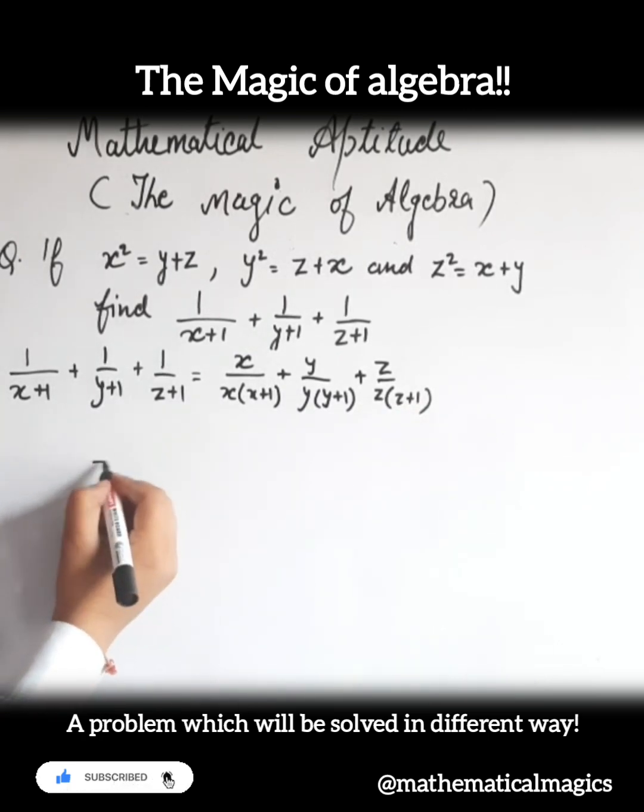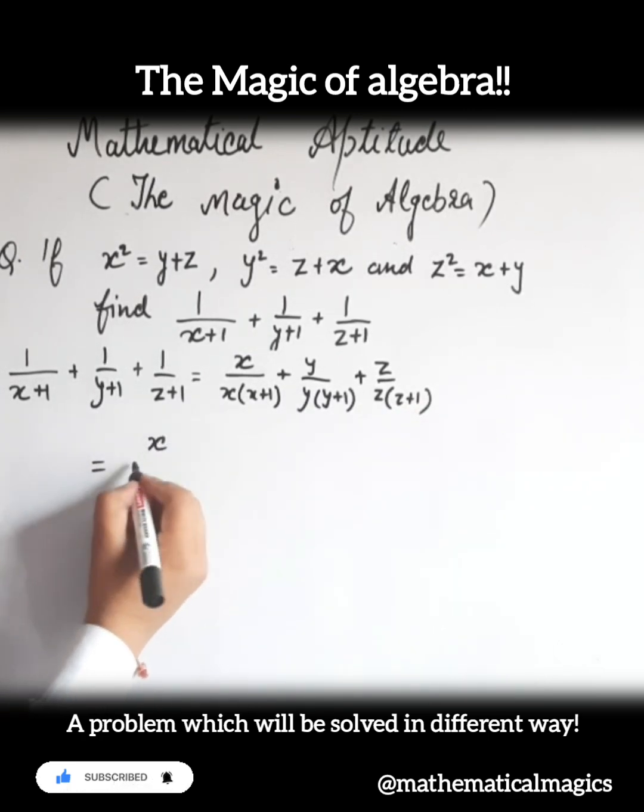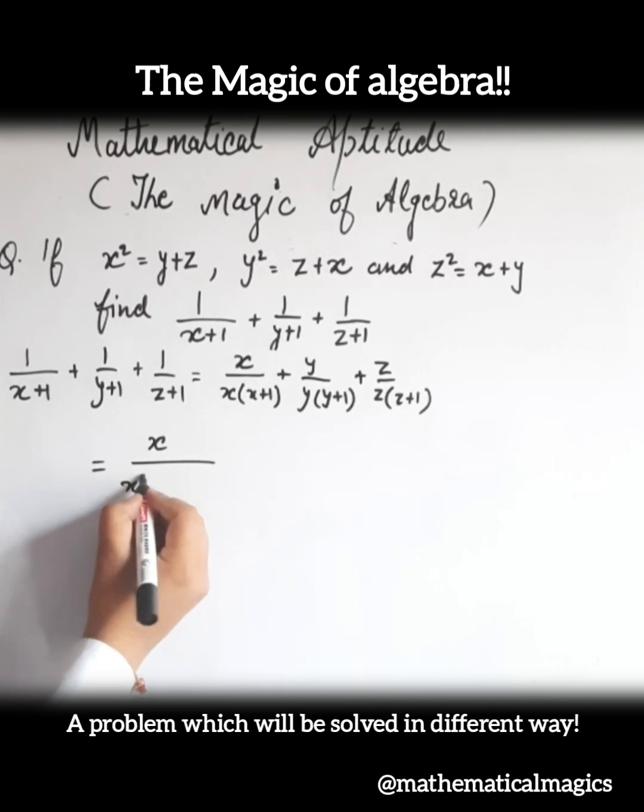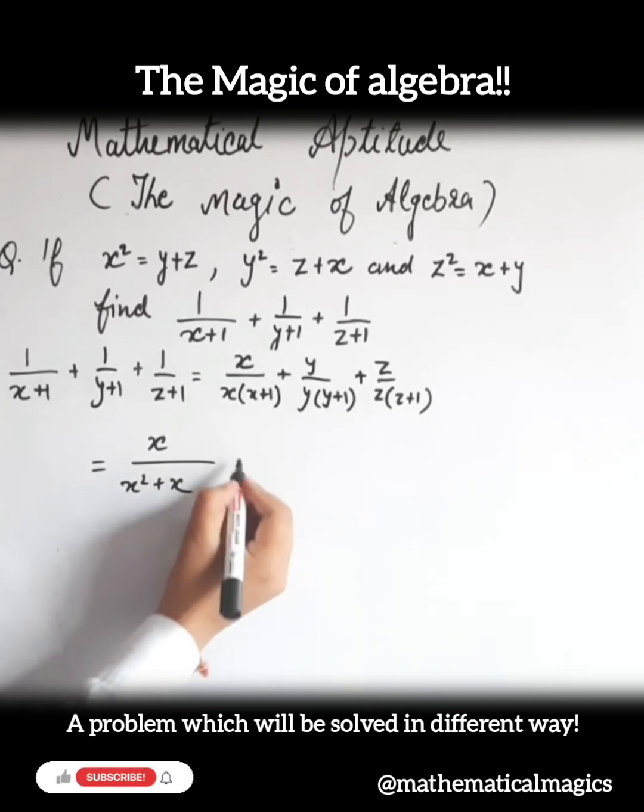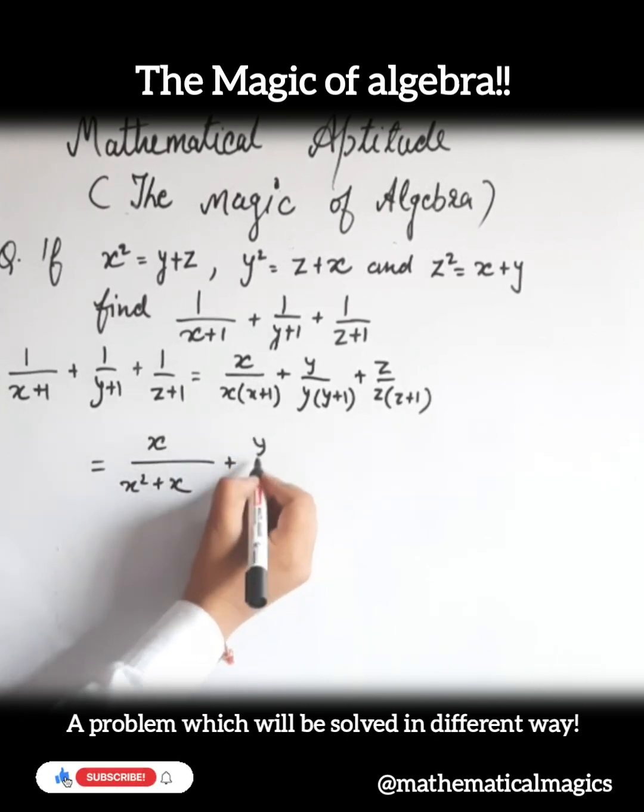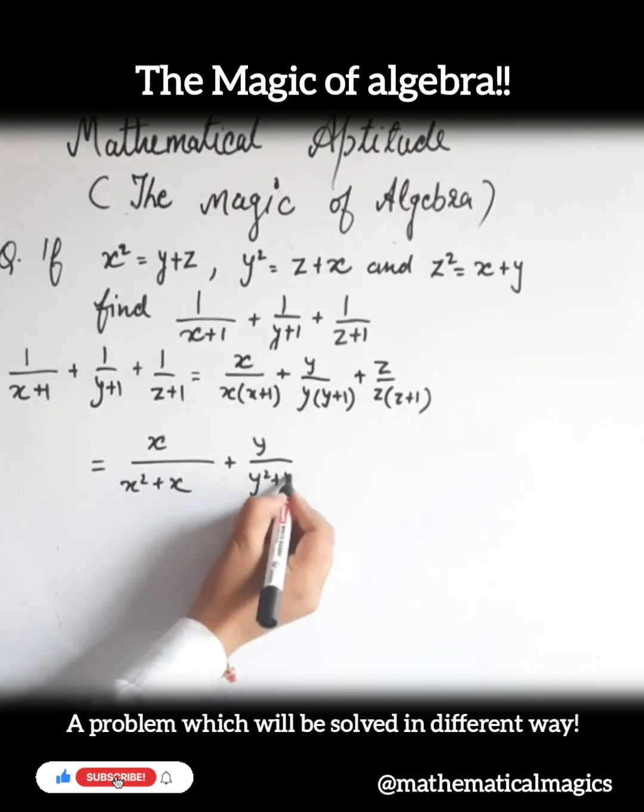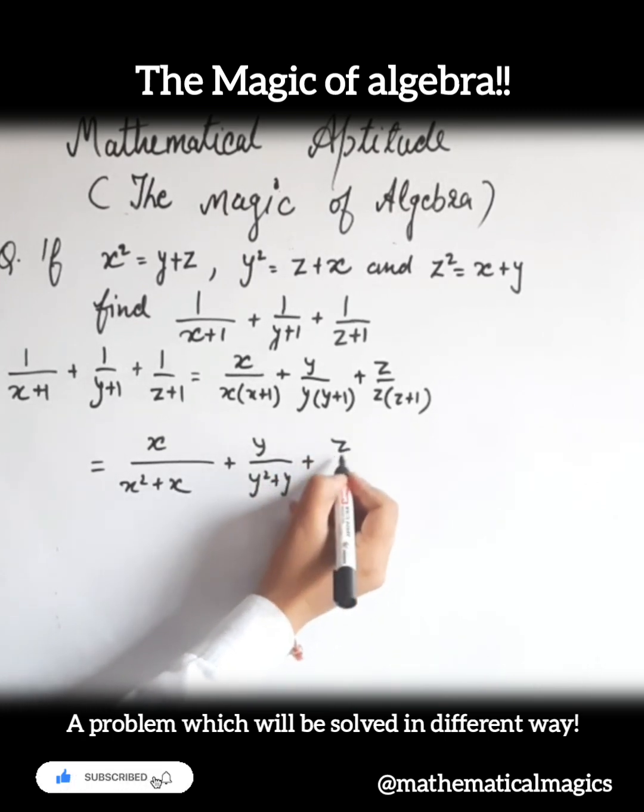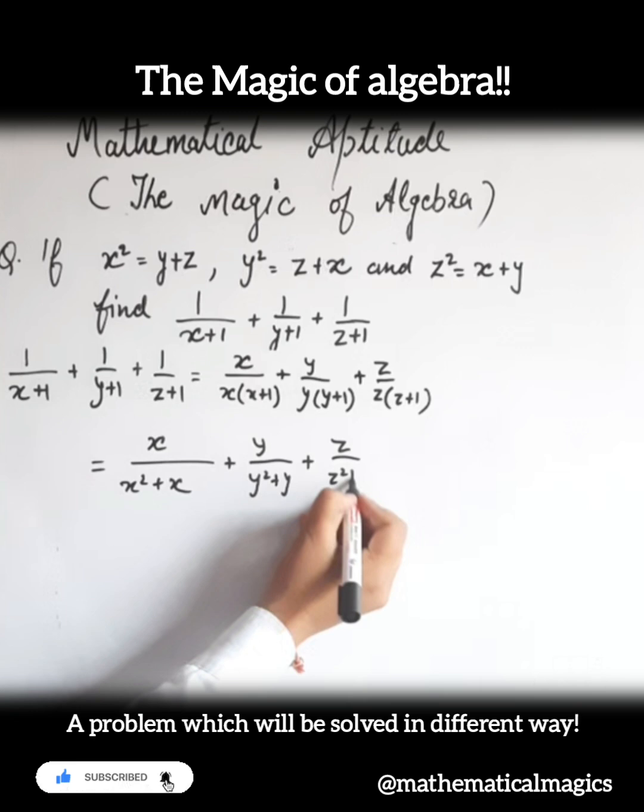What will happen? This becomes x upon x square plus x plus y upon y square plus y plus z upon z square plus z.